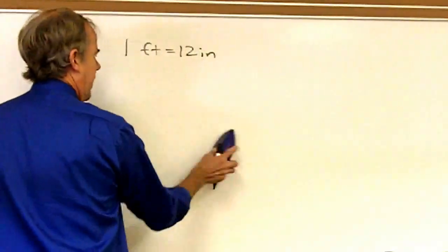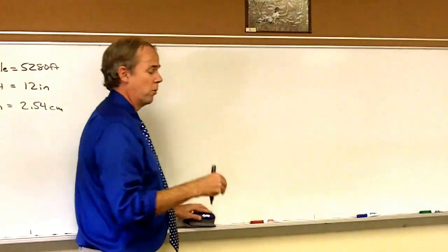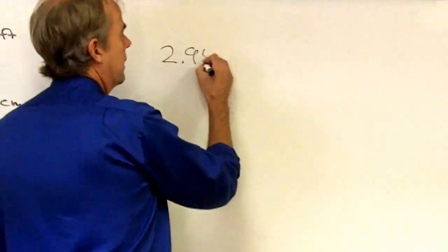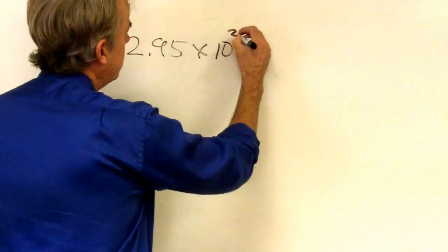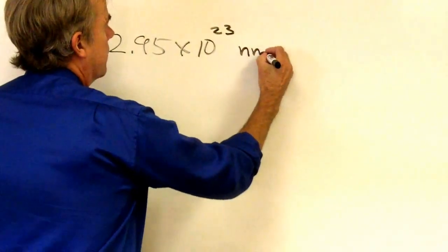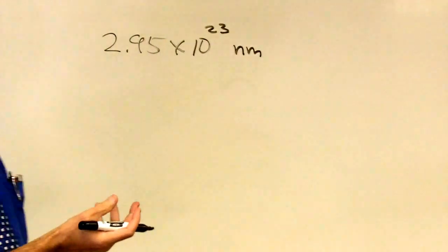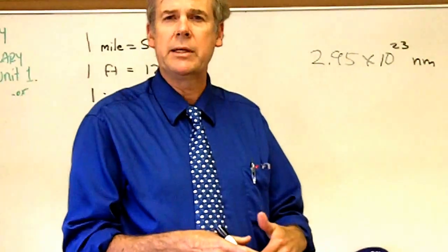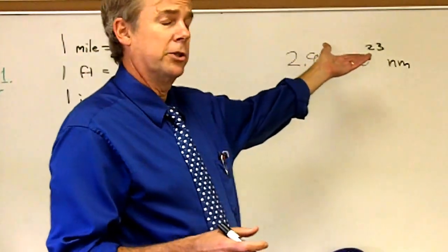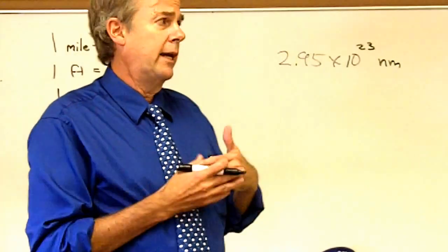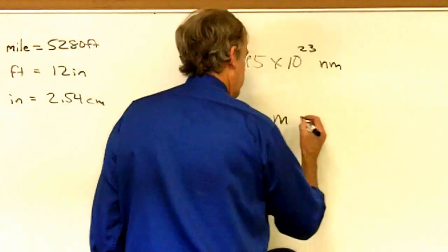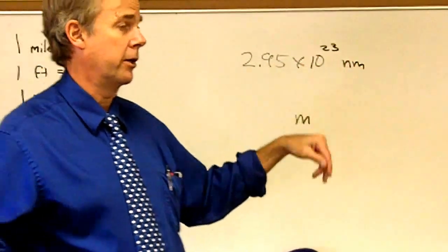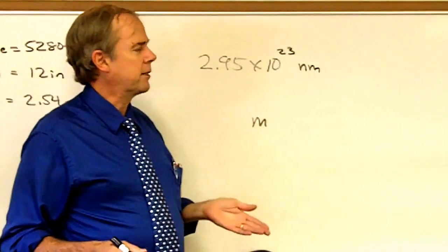As examples of how this can be applied, a more scientifically valid example would be to use the metric system in conversion. Say, for instance, I had 2.95 times 10 to the 23rd nanometers. Nano being a billionth of a meter. Looks like a large number, but let's say I want to convert that to meters, which I can appreciate better. I can picture a meter in my mind. It's roughly a yard in the British system.